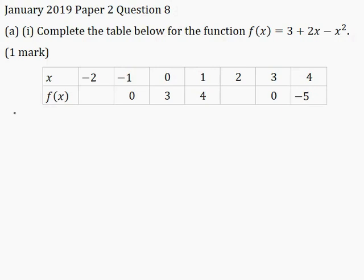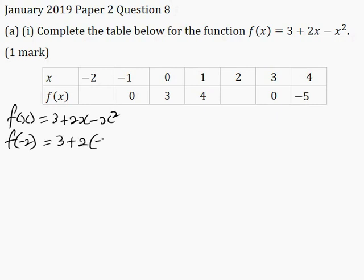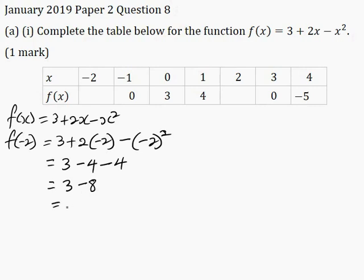I'll start off by writing the function f(x) = 3 + 2x − x². When x is equal to minus 2, f(−2) = 3 + 2 × (−2) − (−2)². This is equal to 3; 2 multiplied by minus 2 is minus 4; minus (−2)² is positive 4. So this is equal to 3 − 4 − 4, which is minus 8, and 3 minus 8 is minus 5. So f(x) = −5 when x = −2.